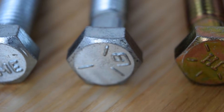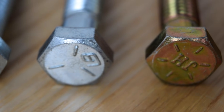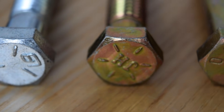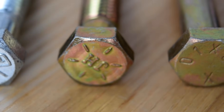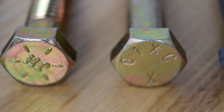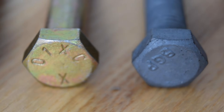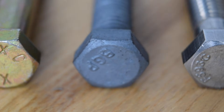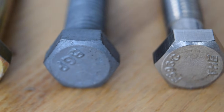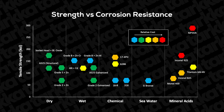Screws are most commonly made from either low carbon or alloy steel, but you will also find them made from stainless steel, titanium, Inconel, brass, and aluminum, or even plastics like nylon or PEEK. The primary considerations for selecting material are strength and corrosion resistance. The strongest fasteners are usually made from heat-treated alloy steel, but steel will corrode when exposed to moisture. Coatings are commonly applied to alloy steel fasteners to make them more resistant to corrosion.